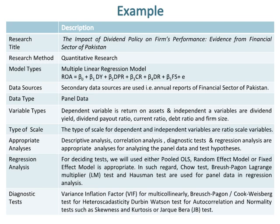The diagnostic tests include: the Variance Inflation Factor (VIF) for multicollinearity, the Breusch-Pagan or Cook-Weisberg test for heteroscedasticity, the Durbin-Watson test for autocorrelation, and normality tests such as skewness and kurtosis or the Jarque-Bera (JB) test.